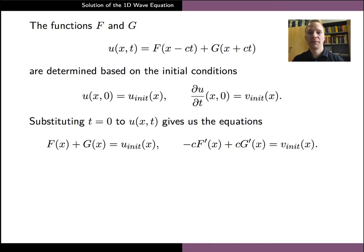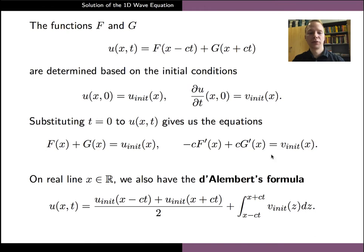The actual functions f and g in the solution are determined by the initial conditions of the wave equation. In particular, if we substitute t equals zero into the form of our solution and its time derivative, we can see that the functions f and g must satisfy the two equations in the middle of the slide. The functions can now be solved from these equations in terms of the known initial displacement and velocity. If we consider the wave equation on the full real line ℝ, the solution can also be given using the d'Alembert's formula. This formula shows very nicely how the displacement for particular values of x and t depends on the initial displacement and initial velocity of the string.